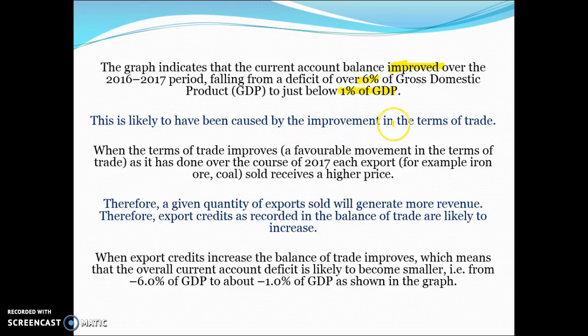This is likely caused by an improvement in the terms of trade, meaning we're getting a higher price for our commodity exports. When the terms of trade improves, over the course of 2017 we're selling our exports on average at a higher price. Because commodity exports face inelastic demand, we generate a higher value for our exports. Export credits recorded in the balance of trade are likely to increase, reducing the balance of trade deficit and decreasing the current account deficit as shown in the graph — reducing from around 6% to around 1% of GDP.